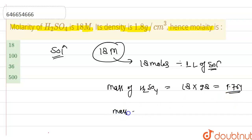Hence mass of water. Mass of water is equal to mass of solution, that is 1.8 kilogram minus 1.764 kilogram, that is nothing but 0.036 kilogram.